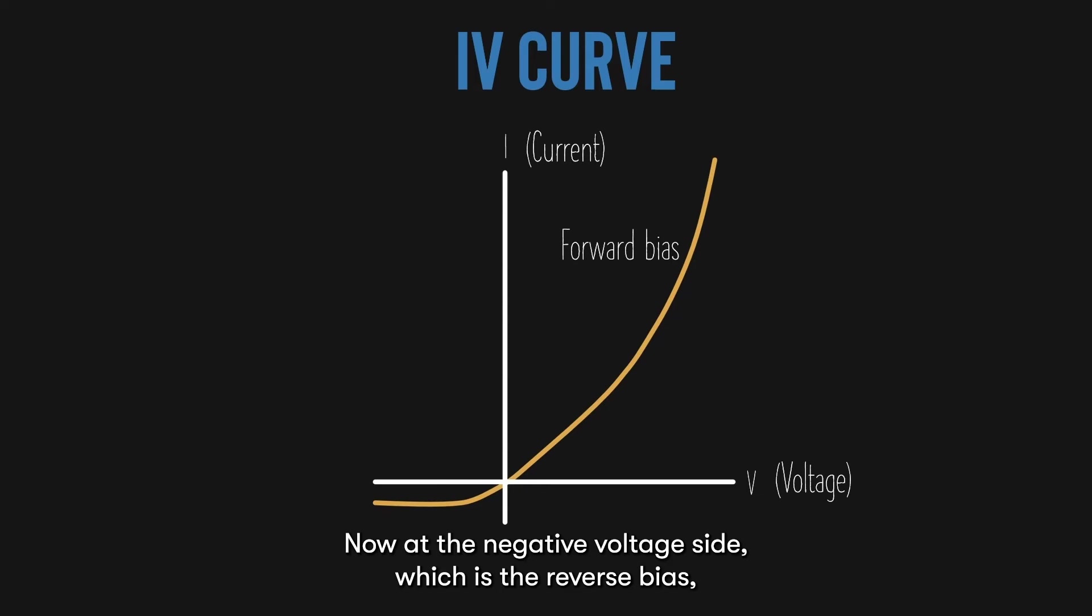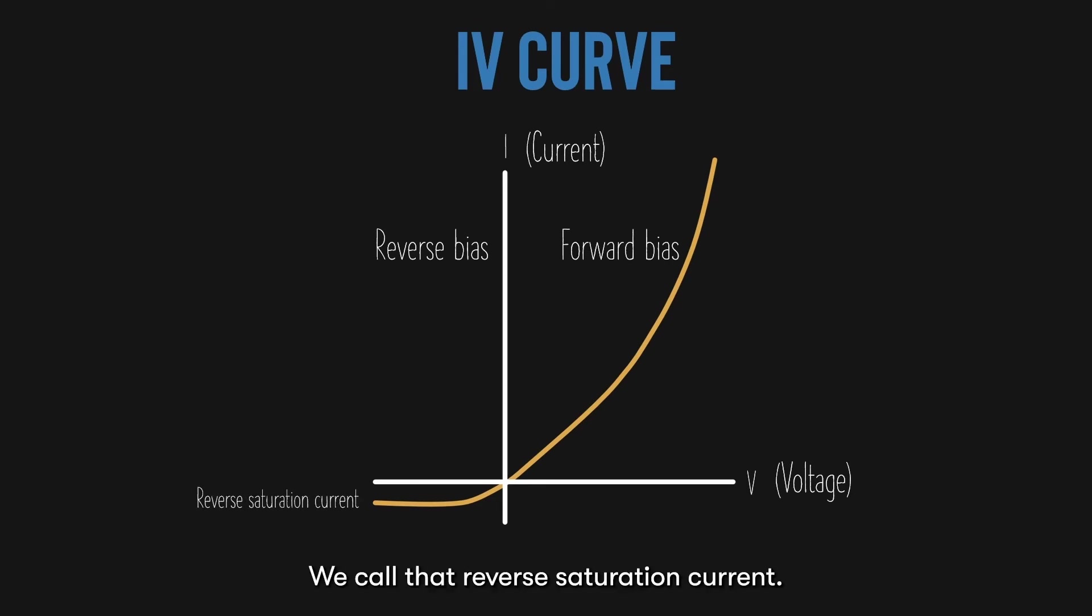Now, at the negative voltage side, which is the reverse bias, no matter how much we try to increase the voltage in the other direction, there is no current flow. But in reality, we have a small and almost negligible amount of current flow in the negative direction. We call that reverse saturation current.